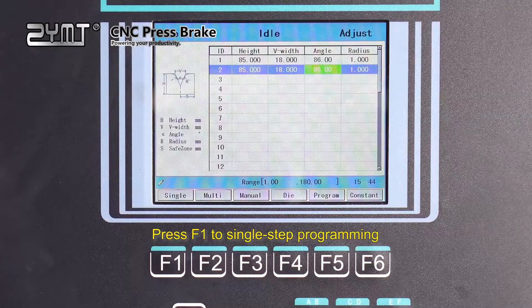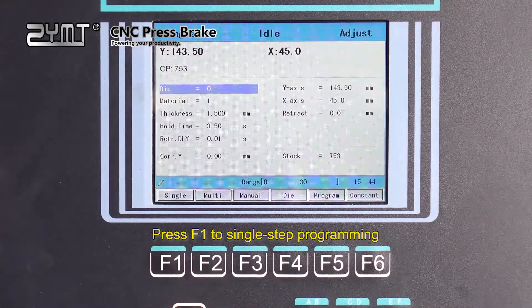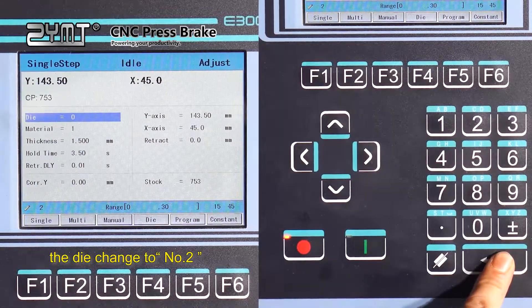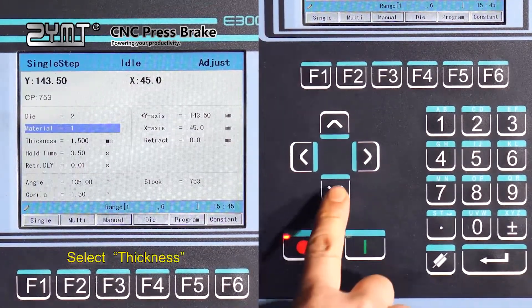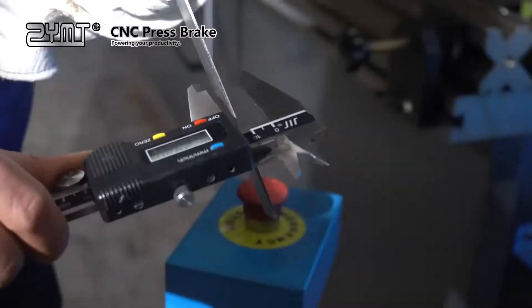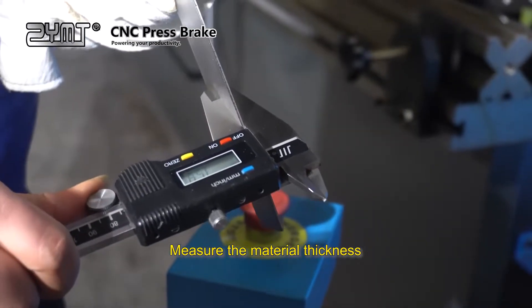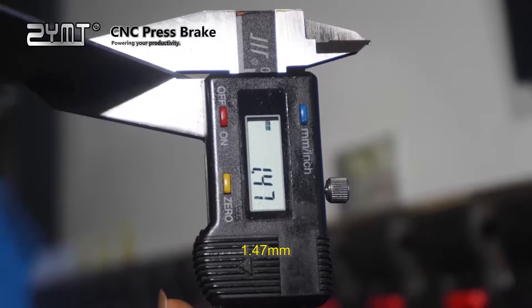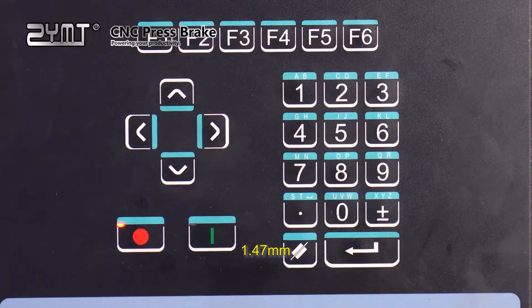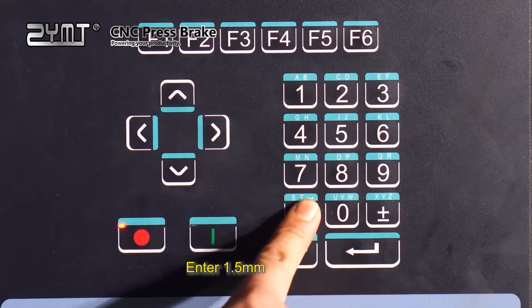Press F1 to single step programming. The die change to number 2. Select thickness. Measure the material thickness. 1.47mm. Enter 1.5mm.